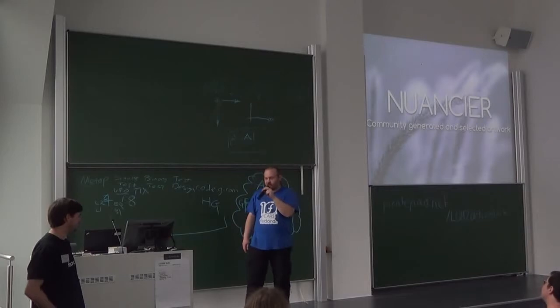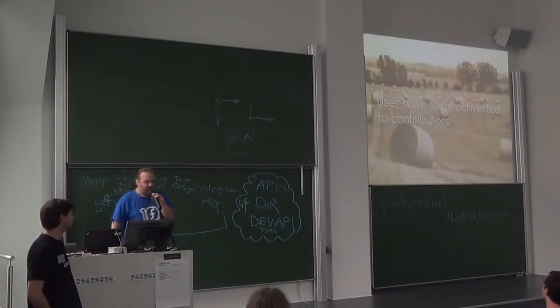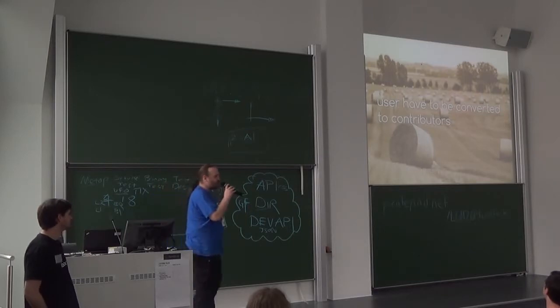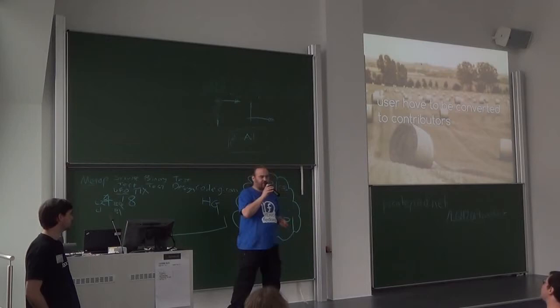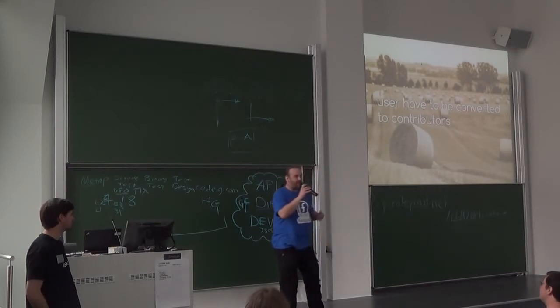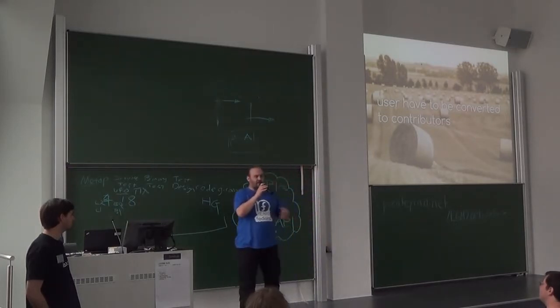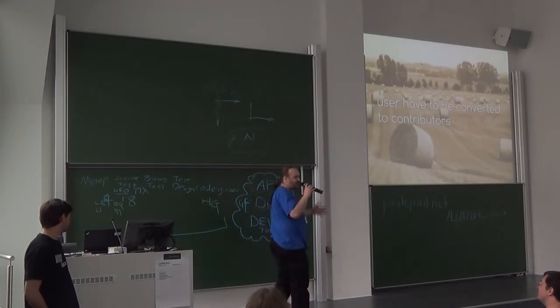So what is Nuancier? First some things before. How we see things is simple. What we need to do free software is simple: contributors. And what we have to do is convert our users into contributors, which means get them out from just using our software and have them do something.